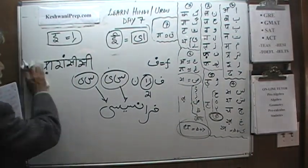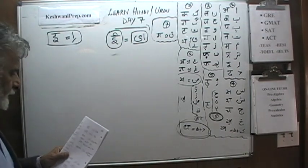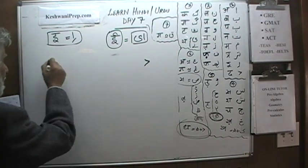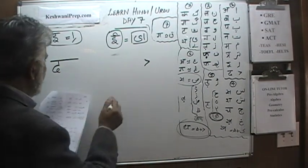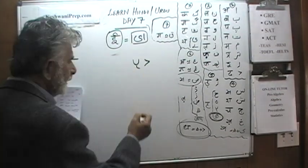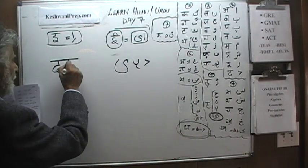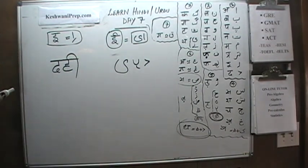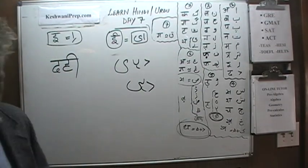Let's do one more pair. Writing Dal and He with a Choti Ye — that is Badi Iki Matra. The word is Dahi. Dal does not join anything. Dahi means yogurt.